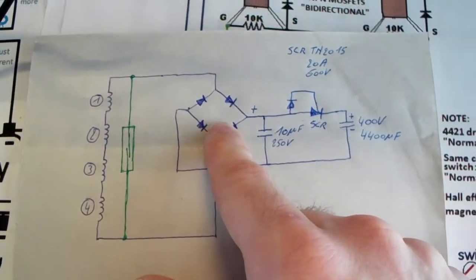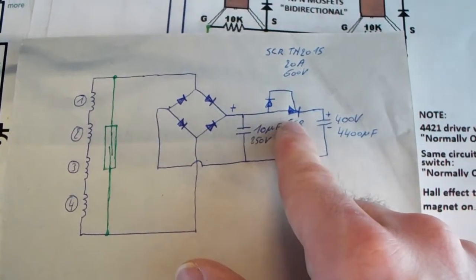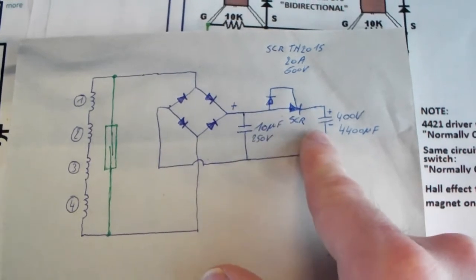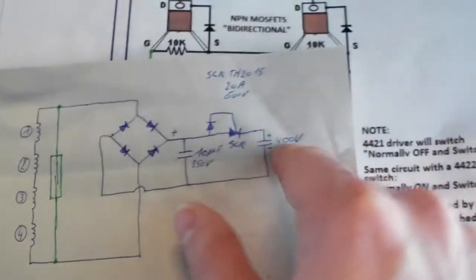Going to a bridge rectifier, going to a small capacitor of 10 microfarads, then going to an SCR, and then going to a big capacitor of 4400 microfarads, 400 volts.